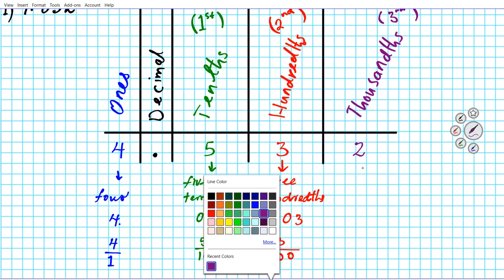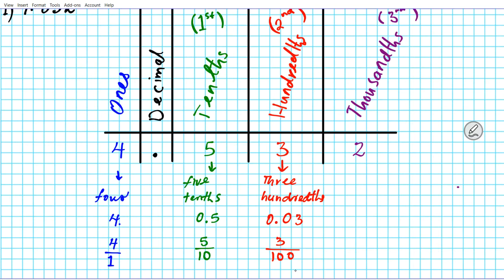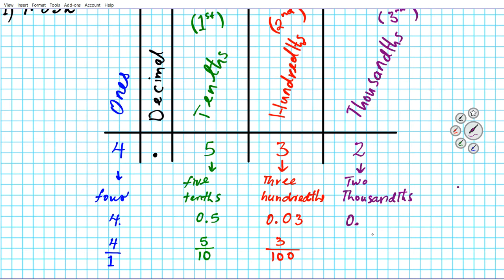The last digit — the 2 in 4.532 — is in the third decimal place, the thousandths place. In name form this digit is 'two thousandths.' How do you write this as a decimal? It's in the third decimal place, so we need to make sure 2 appears in the third decimal place.